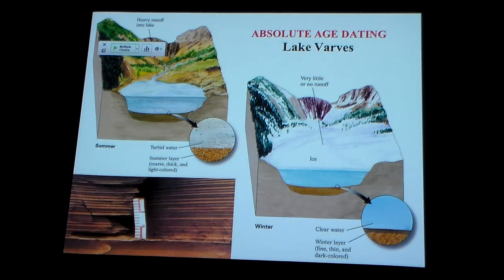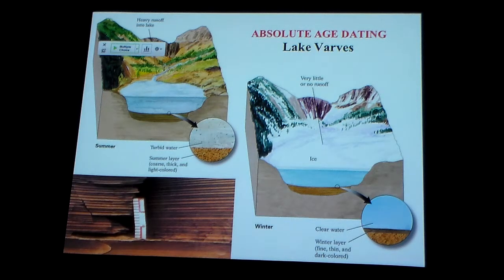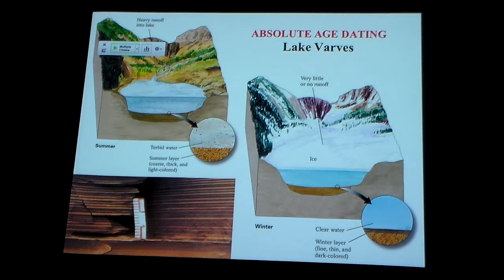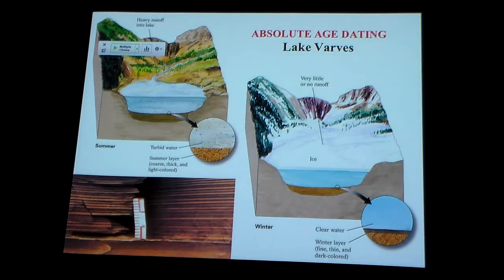So we get these layers — dark, light, dark, light, dark, light — each couplet representing a year's worth of deposition: a summer period and a winter period. We just have to count up the couplets and we know how many years it took to lay down this package.